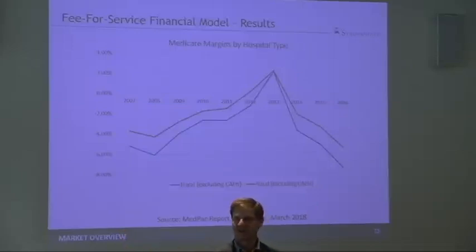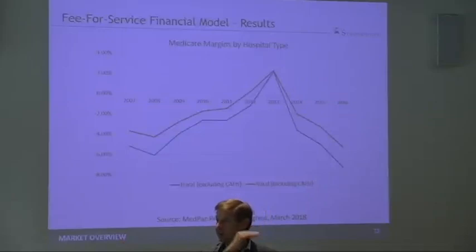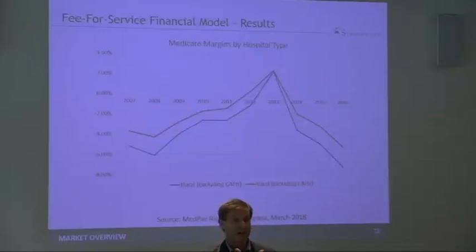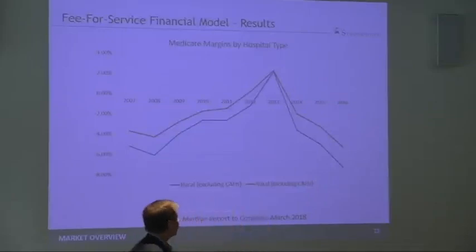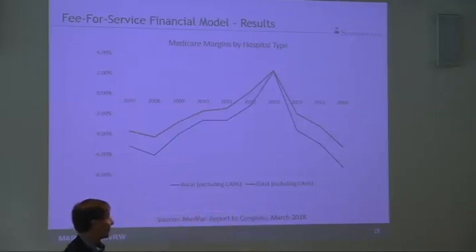Get five percentage points of that to stay in rural communities and we can get more volume. We're going to take it from somebody else, but that's how rural hospitals can get turned around. So anyway, that's the penalty.